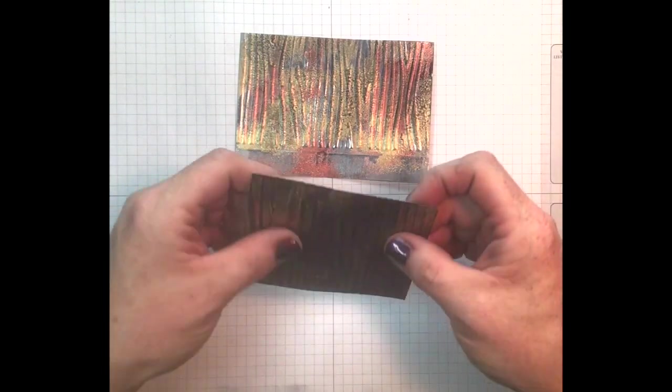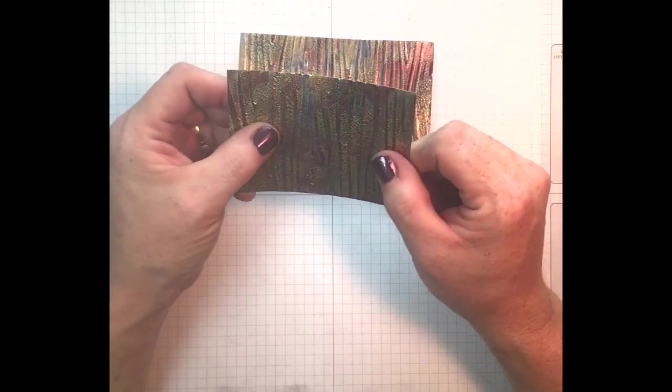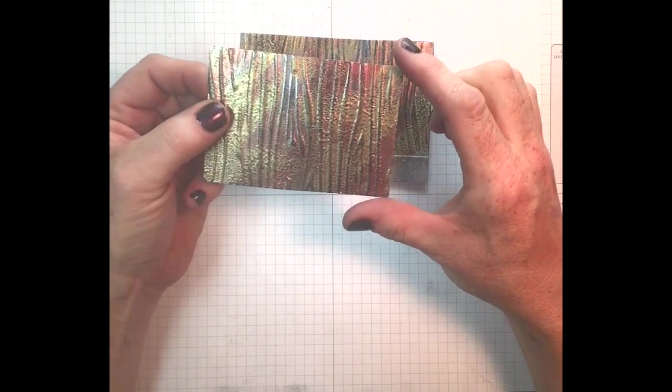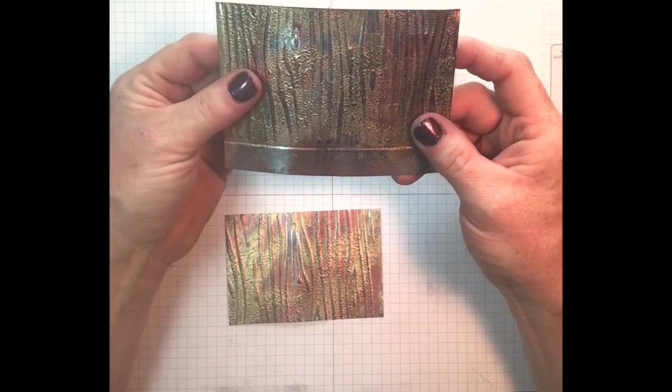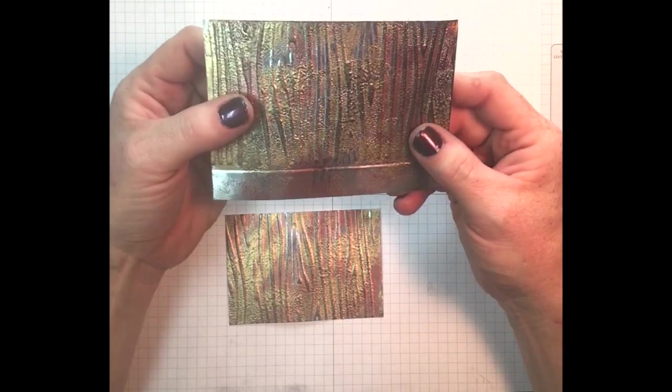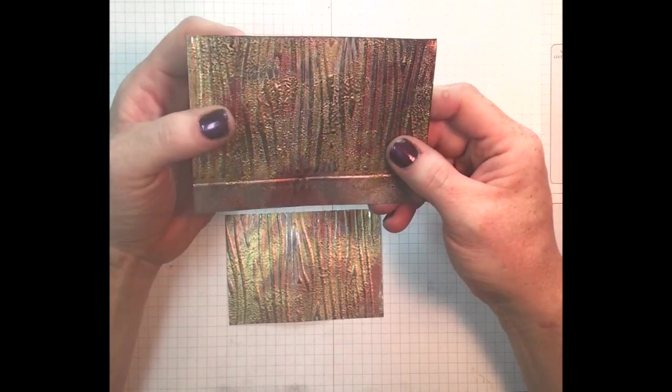Next I cut down my paper. I'm just going to use a strip of this on my card. So I trimmed this to 2 3/4 inches tall by 4 inches wide. Now, if you have any left over, make sure to save it. That stuff is so pretty. You don't want to throw that away. You can use that on a later project.